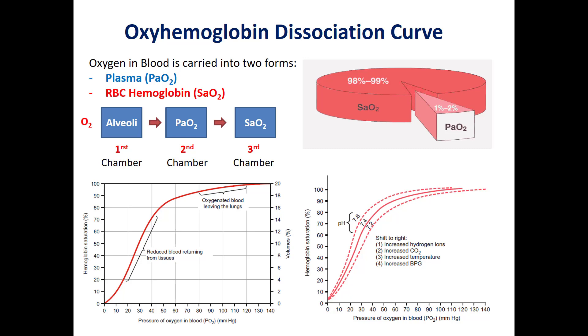Then it will enter the RBC. In order to have saturation in the red blood cell, we must first have saturation in the plasma.